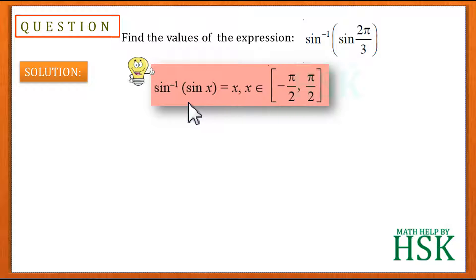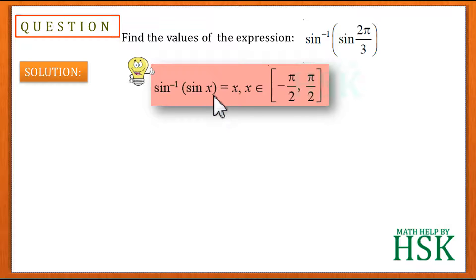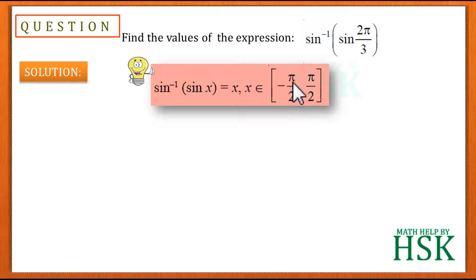Knowing this result alone does not give the complete sense of solving the question. We cannot directly write sin⁻¹(sin(2π/3)) = 2π/3, because 2π/3 does not belong to the interval [-π/2, π/2]. So we must convert this angle so that it belongs to this interval.